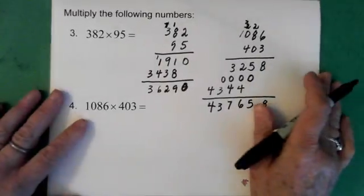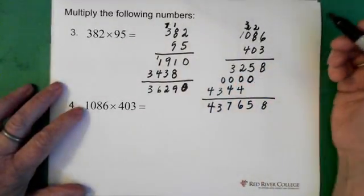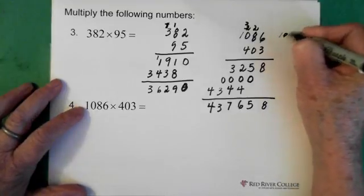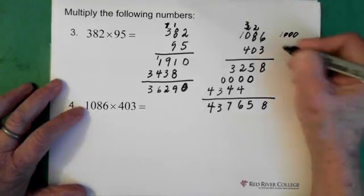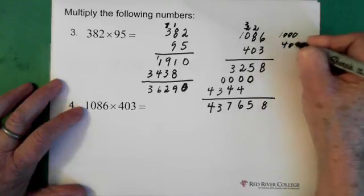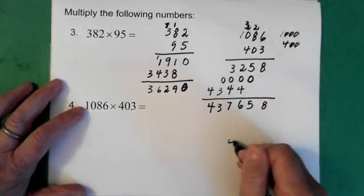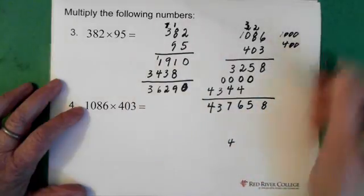Now we can see that the question, sometimes it helps to just stop and say, is this reasonable? We can see that the question, this number is approximately 1,000. This number is approximately 400. So our answer should be around 4 with 1, 2, 3, 4, 5 zeros. 1, 2.